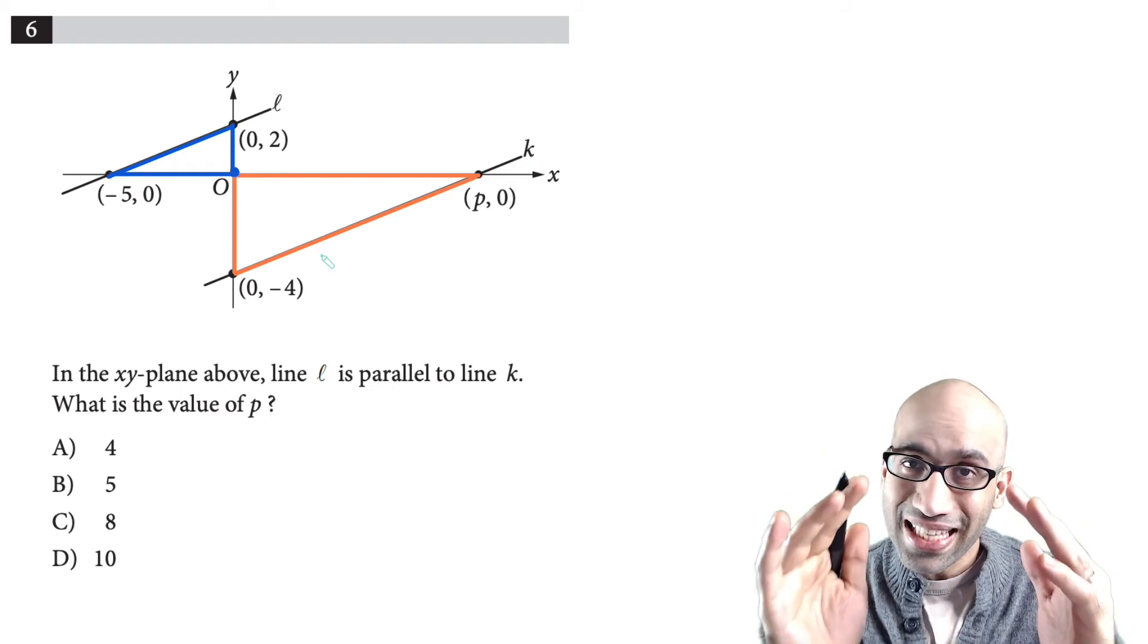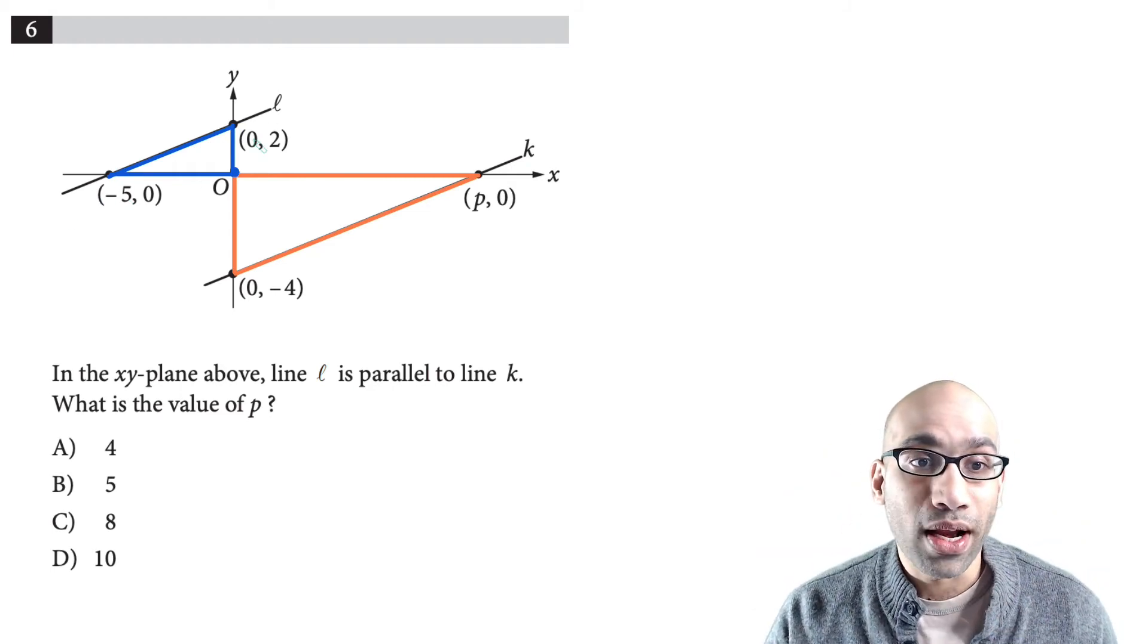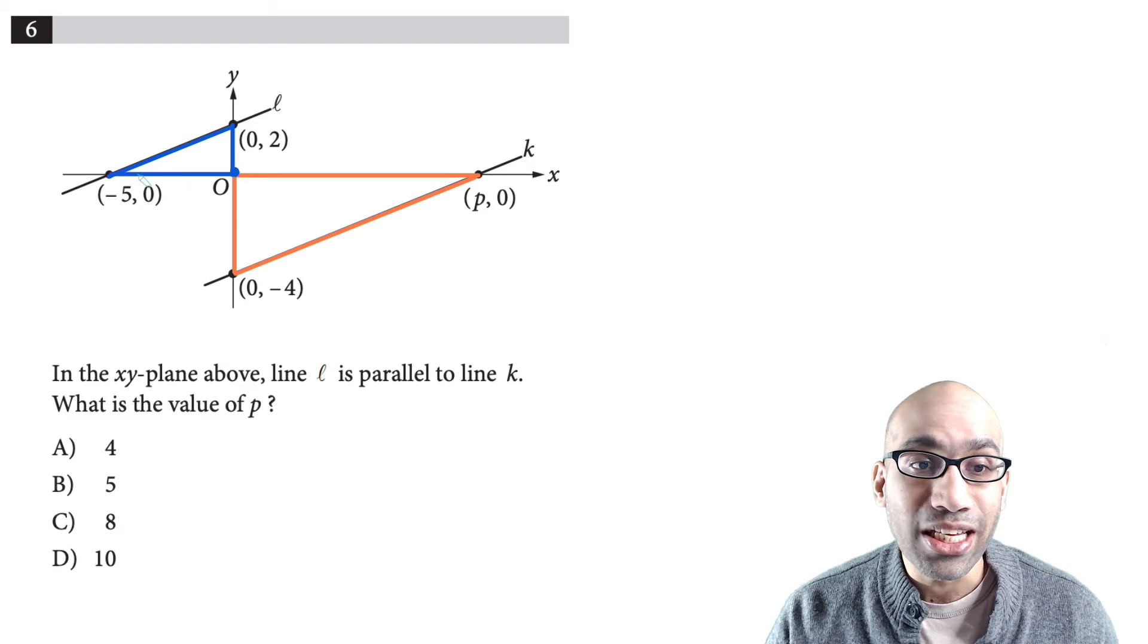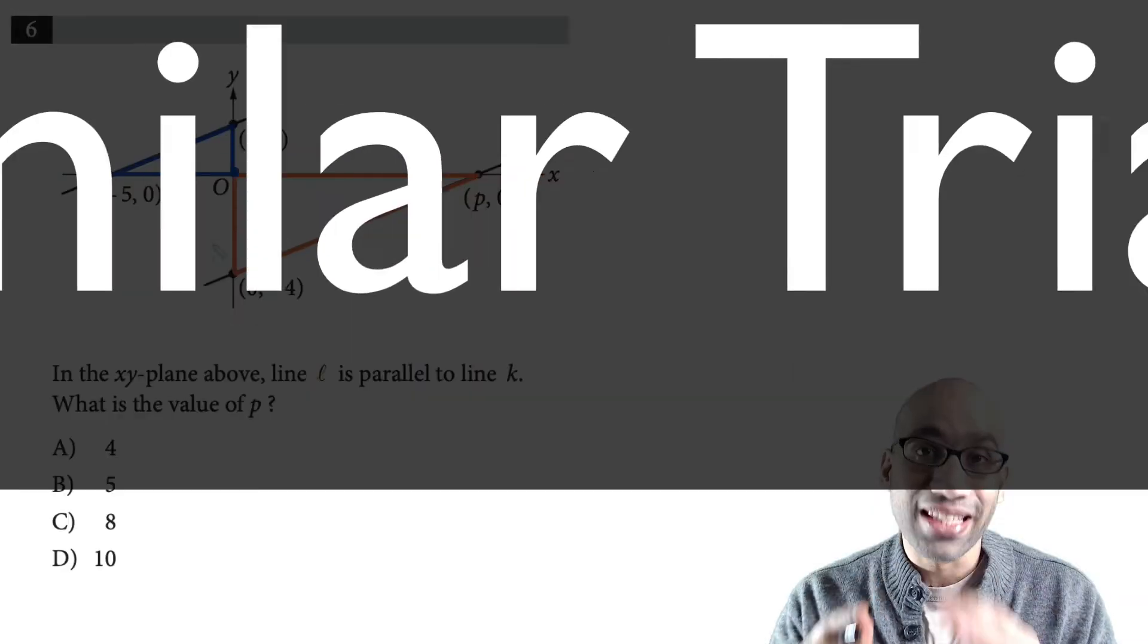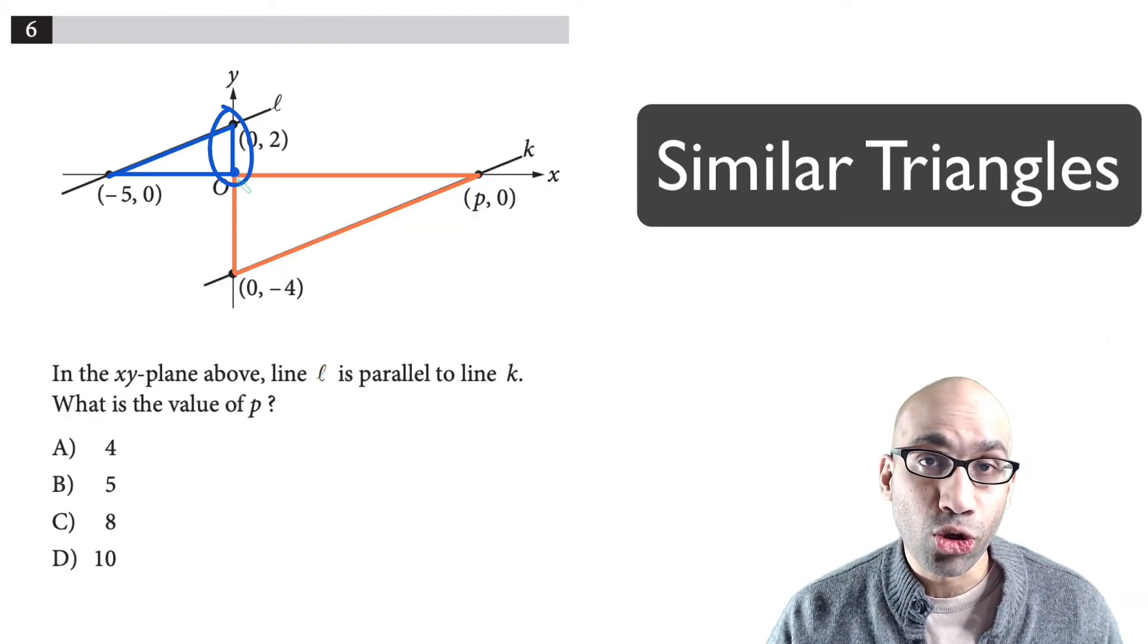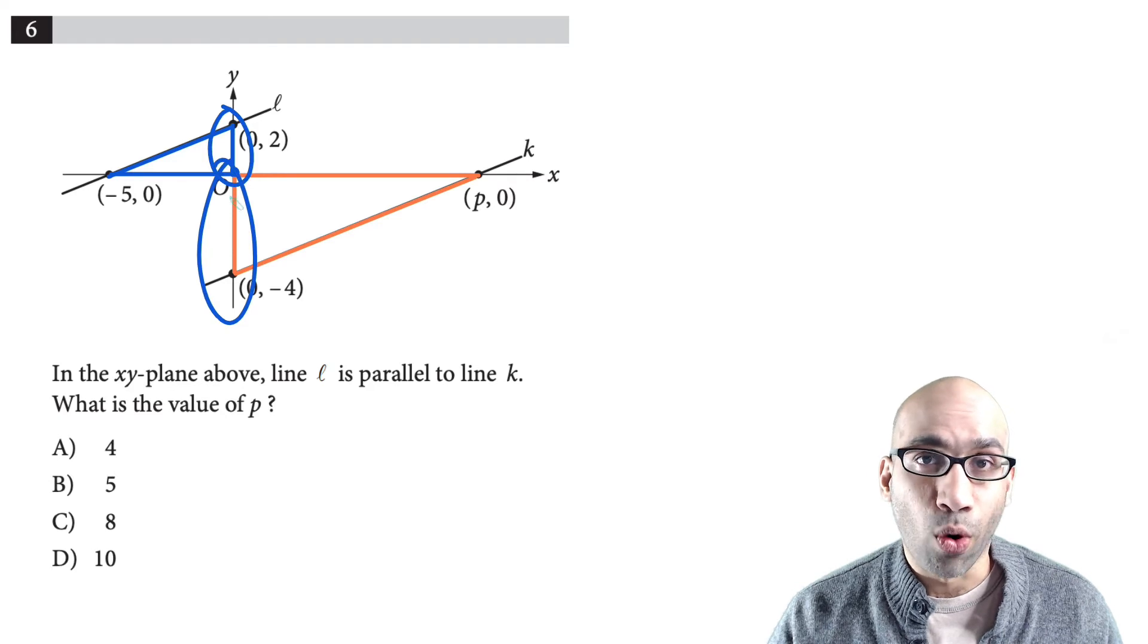Now for the 10 second method. All you need to know is that when lines are parallel these two triangles are going to be similar to each other. This length is 2 here and this length is 4, so it's double.